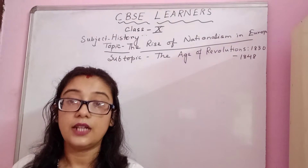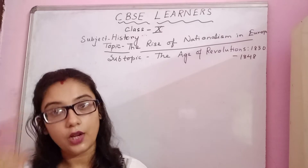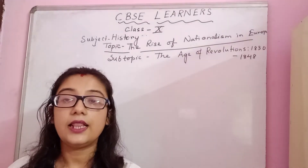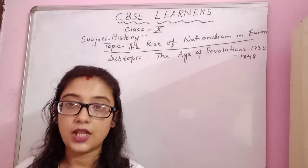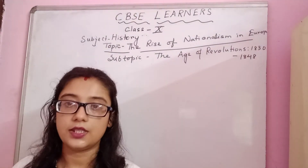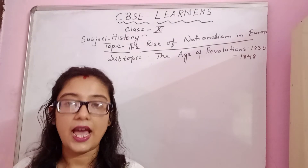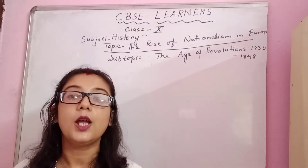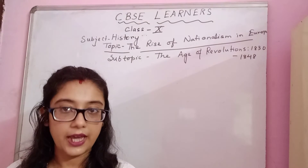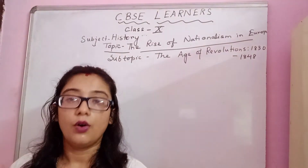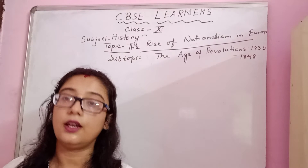We have learned about the emergence of conservatism — the conservatives and their policy of conservatism who wanted to restore monarchical rule once again in Europe. But the liberals and nationalists who were craving for liberty and nationalism didn't stop. They planned by any means to get nationalism in Europe, went underground, started creating societies, and kept trying their best.